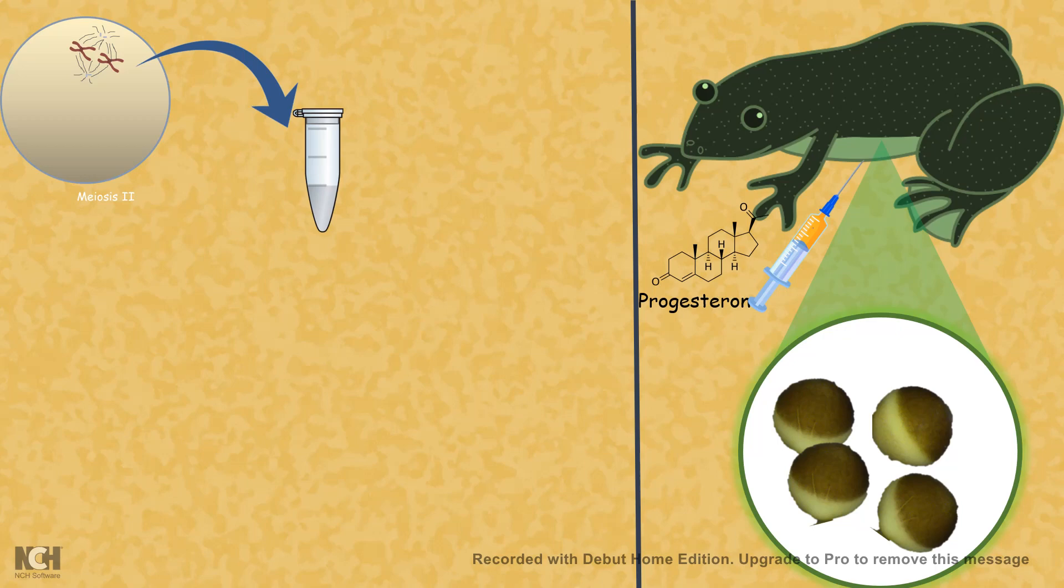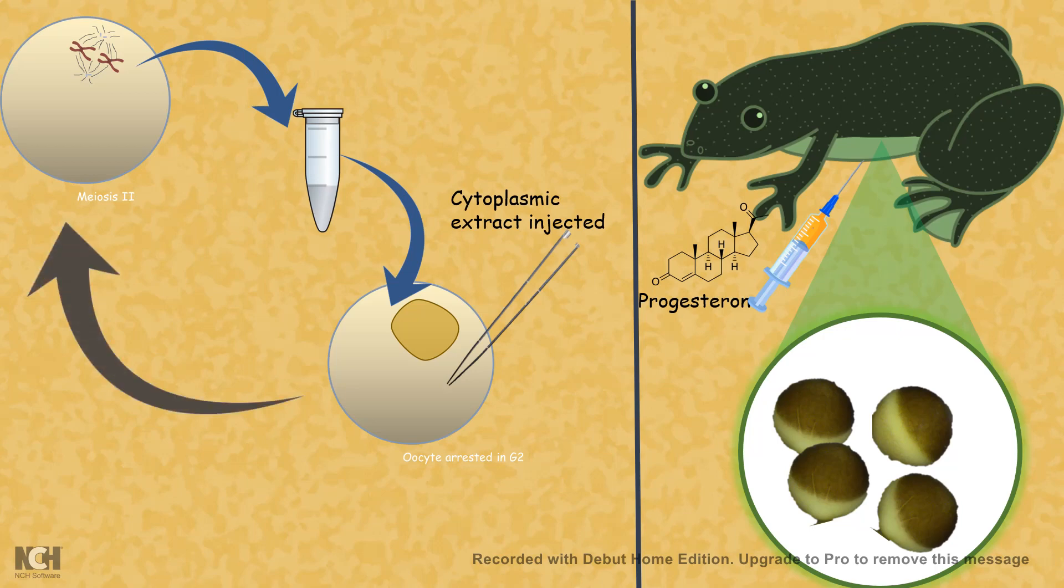And using the micro-injection-based experiment, they injected it into an immature arrested oocyte in G2. And what happened was amazing. The oocyte, which was immature and was sitting in G2 phase, after injection with the cytoplasmic extract from a mature oocyte, it quickly matures.